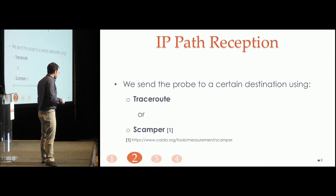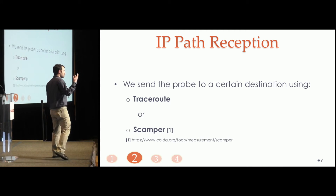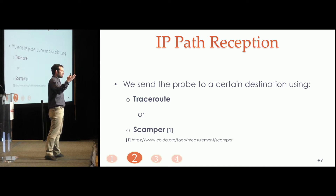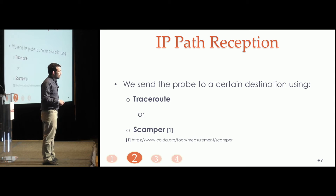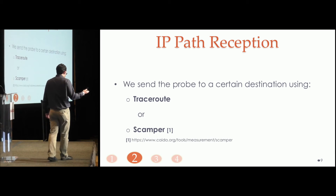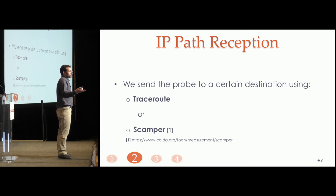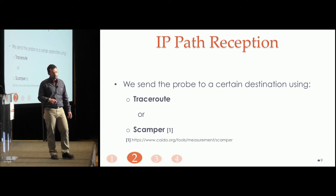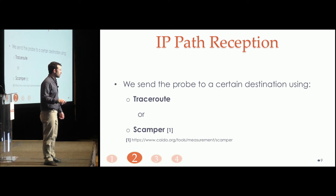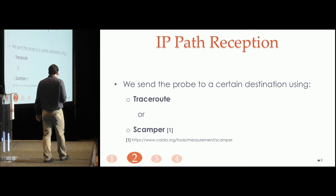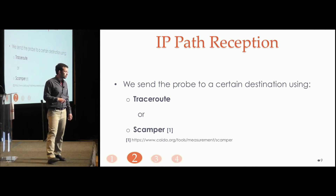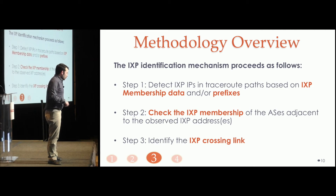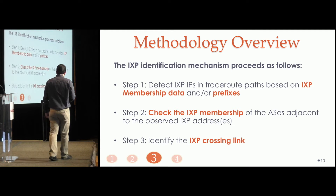In the second module, we receive an IP path by sending a probe for a selected destination — an IP or a URL. To do that, we can use either the well-known Traceroute or Scamper. Scamper is a more sophisticated tool that implements Paris Traceroute, which allows us to overcome some path anomalies due to load balancing.